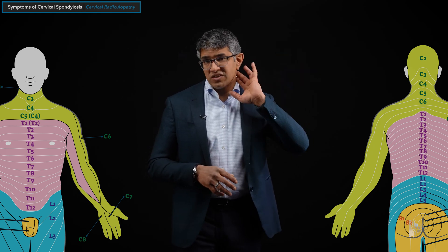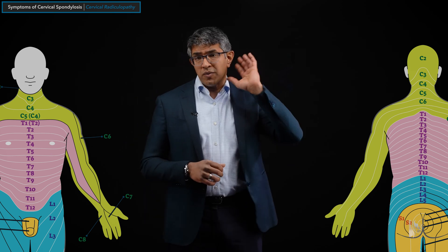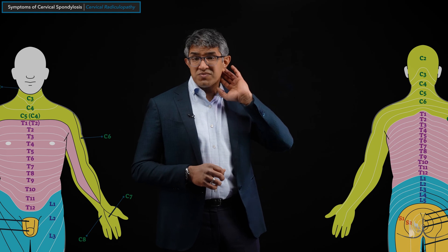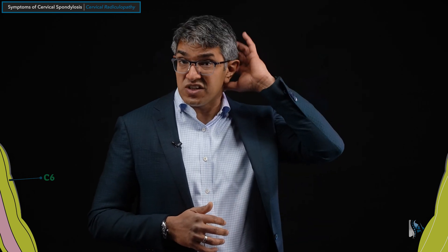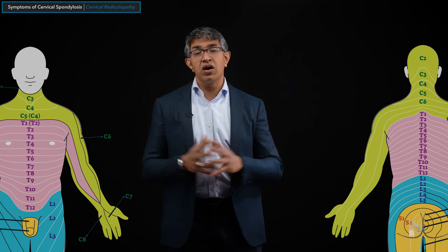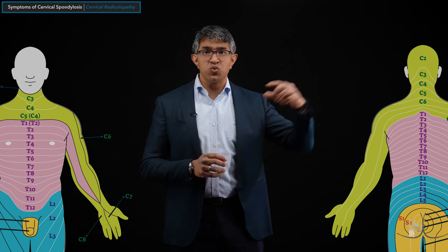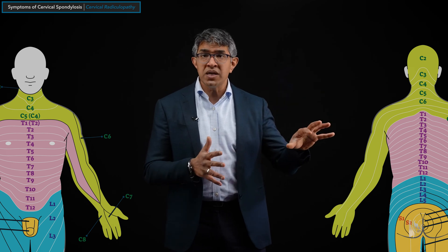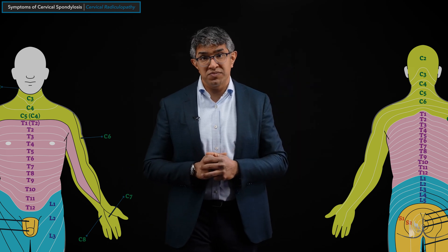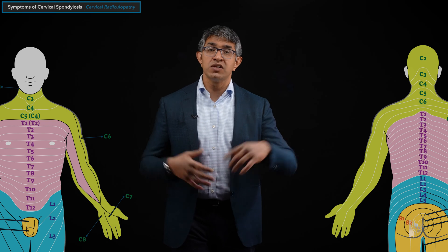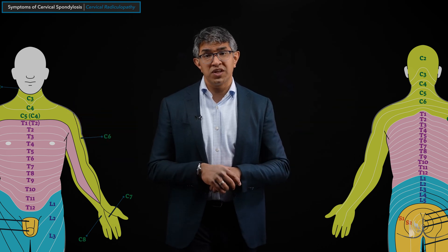Upper cervical radiculopathy — C2, C3, and to some extent C4 — can cause symptoms into the neck. C4 classically presents in the trapezius and neck/shoulder area, C3 often in the neck, and C2 toward the back of the head. There are many things that can cause those symptoms, so upper cervical radiculopathy almost warrants its own discussion. It's much less common, and there's a workup needed to verify the source. C6, C7, C5, and C8 are far more common.